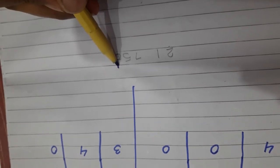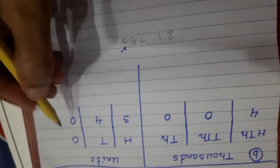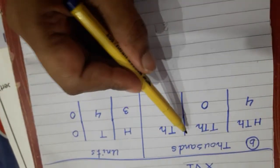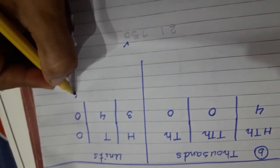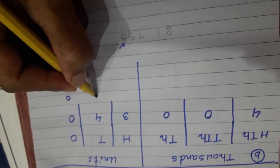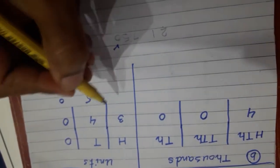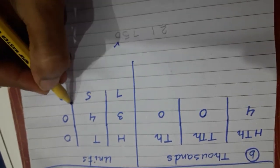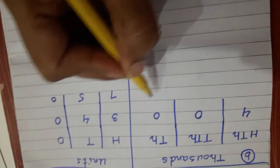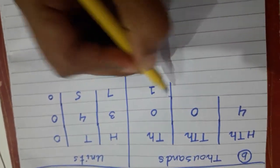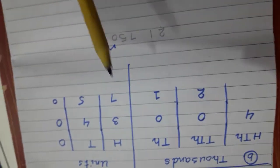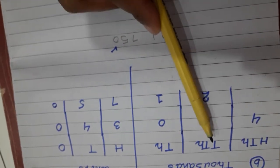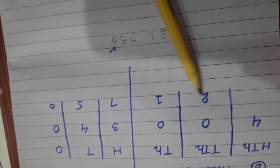How will we adjust these numbers? First of all, we will write from the right side. We will make this table and start from ones, tens, and hundreds. Ones: zero. Five in tens place and seven in hundreds place. One is in thousands place, and two is in ten-thousands place. So this number becomes 21,750.